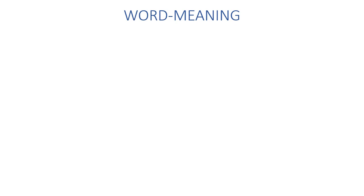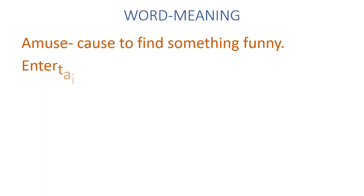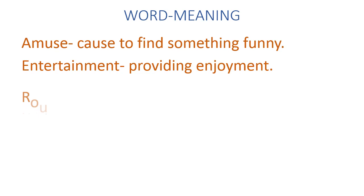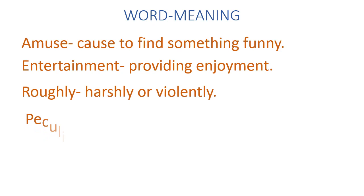Now we are going to start with the word meanings. Amuse: cause to find something funny. Entertainment: providing enjoyment. Roughly: harshly or violently. Peculiarities: unusual feature or habit. Version: a particular edition.